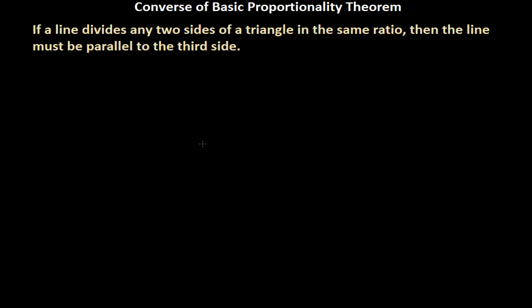In a previous video we learned about the Basic Proportionality Theorem, also called Thales' theorem. Now we are going to learn the converse of the Basic Proportionality Theorem. The statement is: if a line divides any two sides of a triangle in the same ratio, then the line must be parallel to the third side.